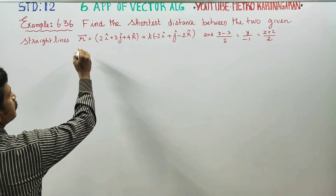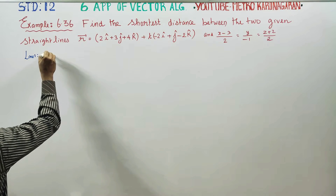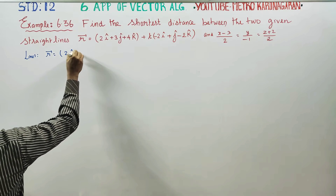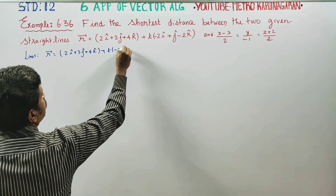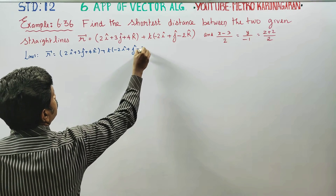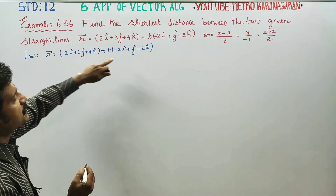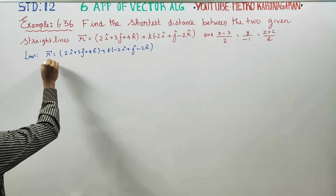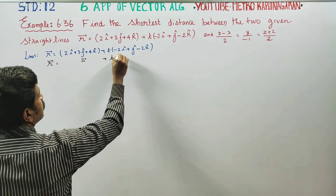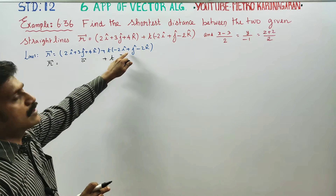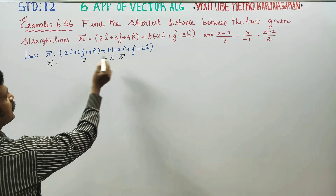Line 1: r vector is equal to 2i plus 3j plus 4k plus t into minus 2i plus j minus 2k. This is a vector equation of a line. The general format is r vector equals a vector plus t into b vector. This is passing through a point and parallel to a given vector. We will find the two vectors: A vector and B vector.